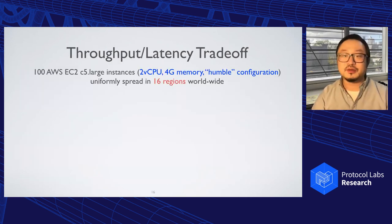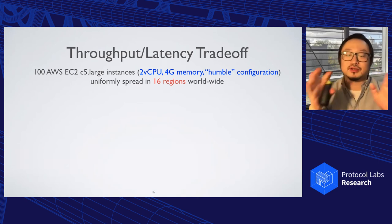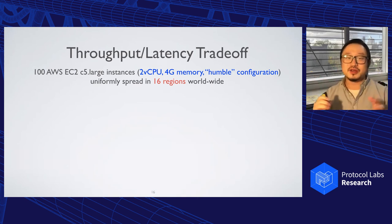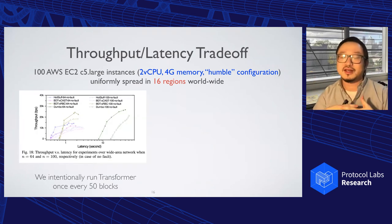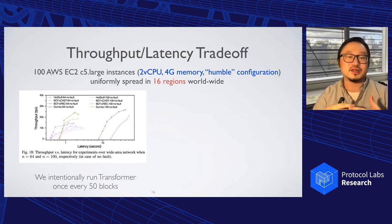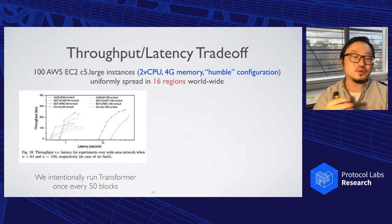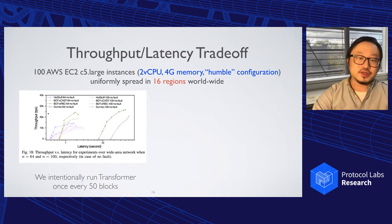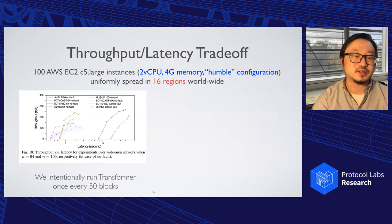We did extensive experiments. First thing to note is our machine is not fancy — it's a very normal machine, as poor academics cannot afford very fancy hardware for experiments. Still, the experimental results show mostly what we expected. Even in the best case, we always intentionally run the transformer once in a while to simulate network fluctuation. As we can clearly see, the green lines are Dumbo, the yellow ones are the BDT variants, and the benchmark is HotStuff. The latency is clearly close to HotStuff.